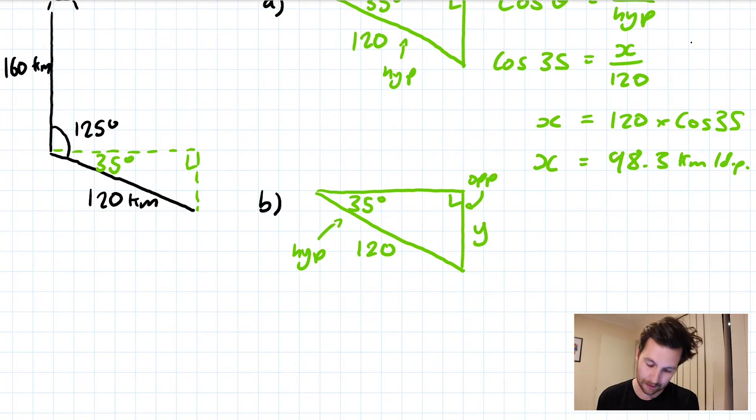I feel like I keep ducking out of shot, but that's probably not so important as long as you can hear what I'm saying. So sin 35° = the missing side length over 120. Hang on, I've jumped ahead. I always write the ratio first. Sine of the angle equals opposite over hypotenuse.